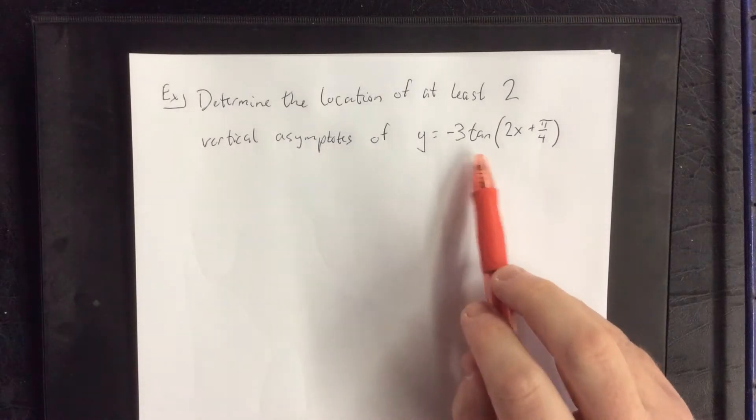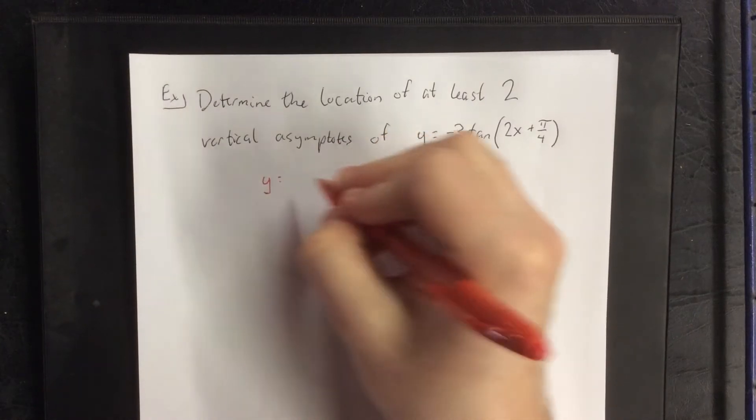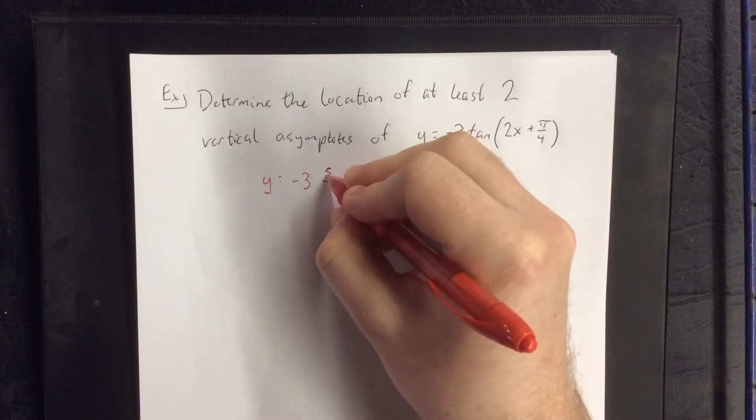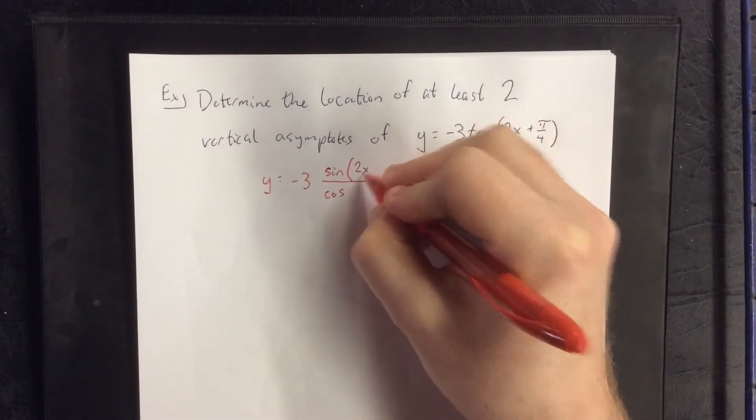For this problem, we have a transformed tangent function. If I were to express this in terms of fundamental identities, I could write this as negative 3 times, for the tangent, that would be sine over cosine. The angle will stay the same.